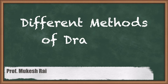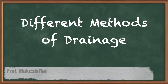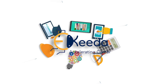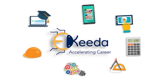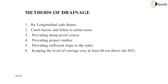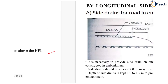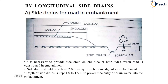Hello students, today we are going to study different methods of drainage. The first method is by longitudinal site drain, the next one is catch basins and inlet in urban areas, next one is providing dam proof course, another one is providing proper camber, next one is providing sufficient slope to the site, and the last one is keeping the level of carriageway at least 60 cm above the HFL. Now we will see each one in detail, starting with the longitudinal site drain.